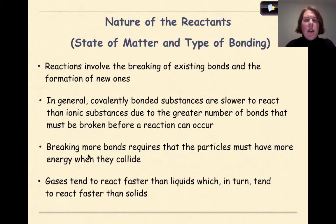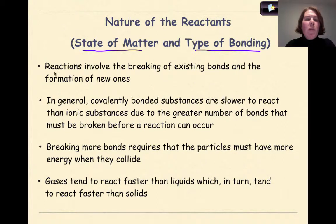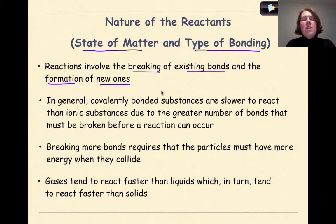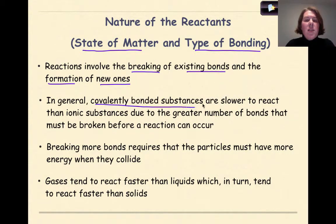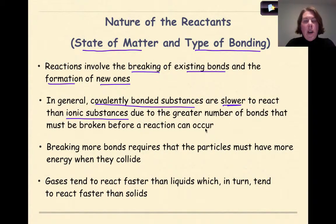Let's start off by talking about the nature of reactants. Specifically, the state of matter involved — whether it's a solid, a liquid, or a gas — and the type of bonding that is involved, specifically looking at ionic and covalent. Reactions involve the breaking of existing bonds and the formation of new ones. Breaking bonds involves the absorption of energy, while typically the formation of new ones is going to release energy. In general, covalently bonded substances are slower to react than ionic substances due to the greater number of bonds that must be broken before a reaction can occur. There are always exceptions to the rules, but this is a general trend.